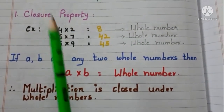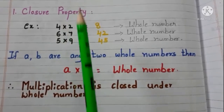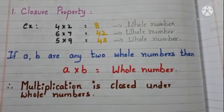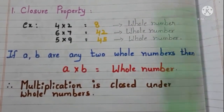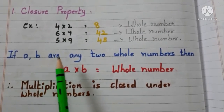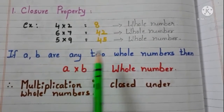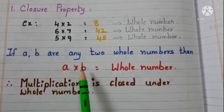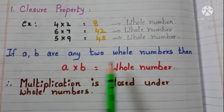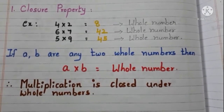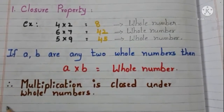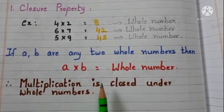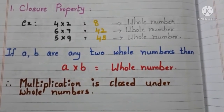Here, when we are multiplying 2 whole numbers, we are getting the product as a whole number. Let us say, if A and B are any 2 whole numbers, then A into B is equal to a whole number. Therefore, we can conclude that multiplication is closed under whole numbers.